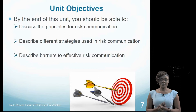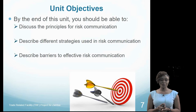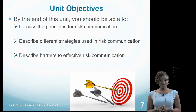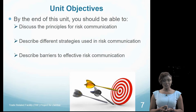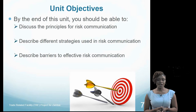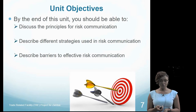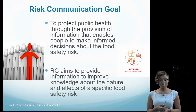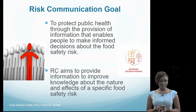For this unit, our objectives are that by the end of it you should be able to discuss the principles related to risk communication, differentiate strategies that are used in risk communication, and describe the barriers that affect risk communication. This is the first component of risk communication; the other component will look at the barriers and how we engage stakeholders.